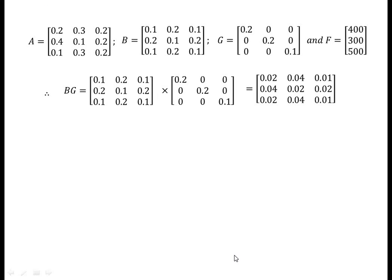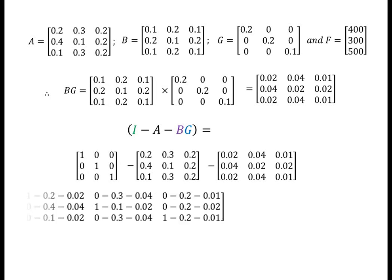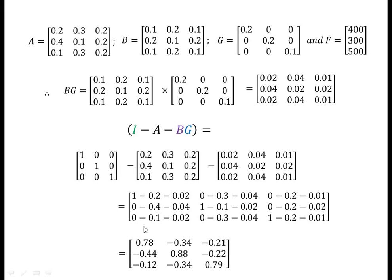I minus A minus B into G is equal to the matrix: 0.78, minus 0.34, minus 0.21, minus 0.44, 0.88, minus 0.22, minus 0.12, minus 0.34, and 0.79.